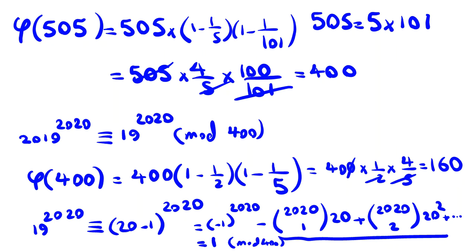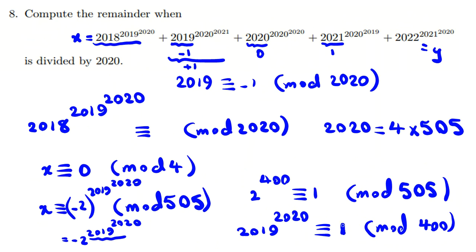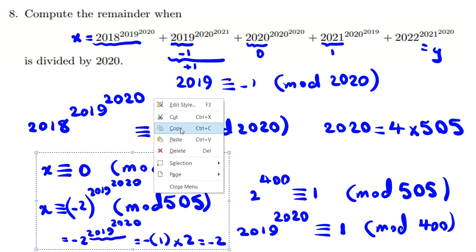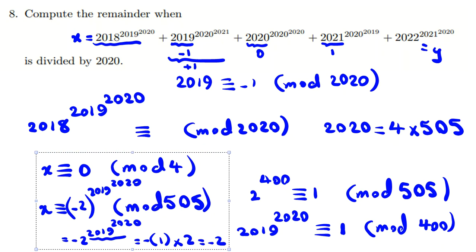So 19^2020 ≡ 1 mod 400, which means 2^(400k+1) ≡ 2 mod 505 — wait, the power is 1, so 2^1 = 2. But we have negative 2, so x ≡ -2 mod 505. Also x ≡ 0 mod 4 and x ≡ -2 mod 505.